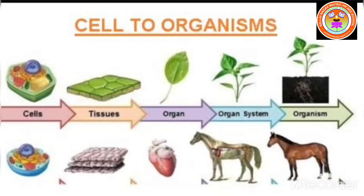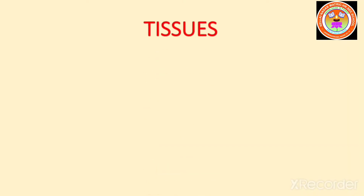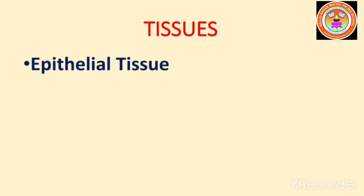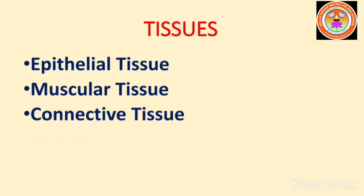Tissues are groups of similar cells that have a common function. The four basic tissue types are epithelial tissue, muscular tissue, connective tissue, and nervous tissue. Each tissue type has a characteristic role in the body.